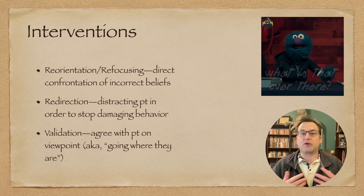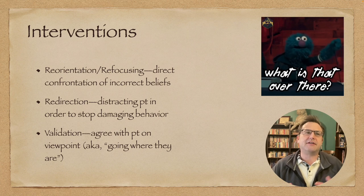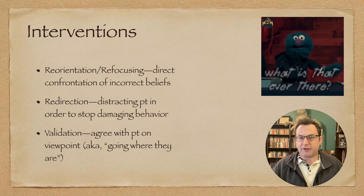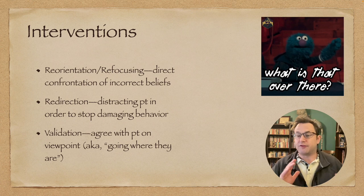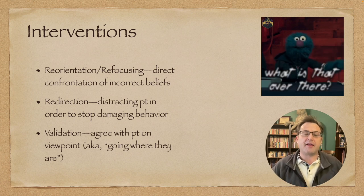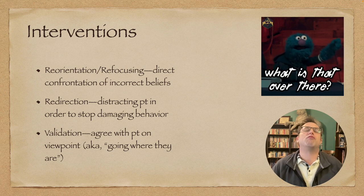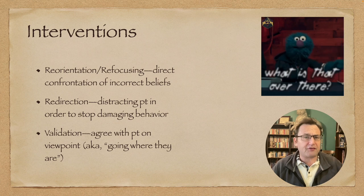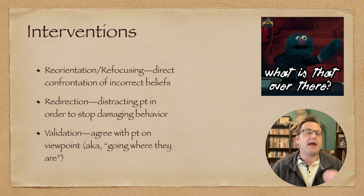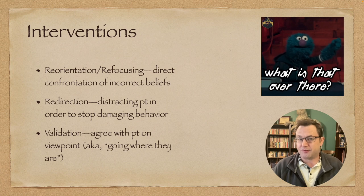Briefly, interventions are broken down into three types: reorientation or refocusing, which is a direct confrontation of incorrect beliefs — talking to the patient and saying 'no, we've discussed this, that's not true'; redirection, which is simply distracting the individual with something else; and validation, which is agreeing with the patient and rolling with whatever they're saying. Generally, reorientation and refocusing are used with patients with psychiatric disorders, redirection may be used with dementia, and validation is typically used with dementia patients. We'll go into more detail on this later. All right, that's our brief overview — I'll catch you in the next one. Have a good day!